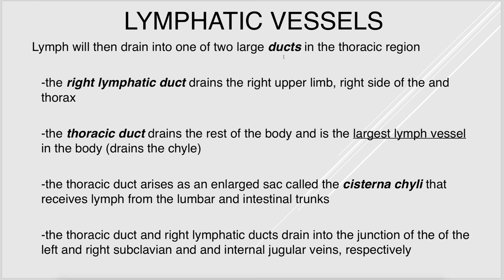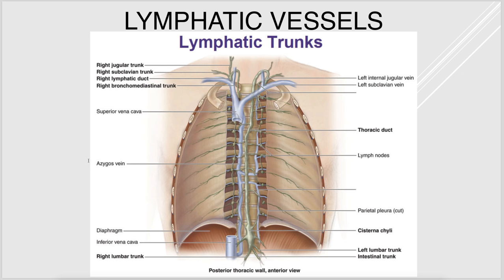The ducts are the largest lymphatic vessels. There are two main ones: the right lymphatic duct and the thoracic duct, which is the largest lymph vessel in the body. These vessels get bigger and bigger and eventually drain into the blood. The thoracic duct drains into the junction of the left subclavian and left internal jugular vein, getting back to the heart easily. The right lymphatic duct does the same thing on the right side. That's how excess fluid gets back into the blood and back to the heart.